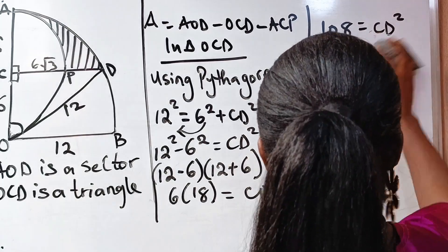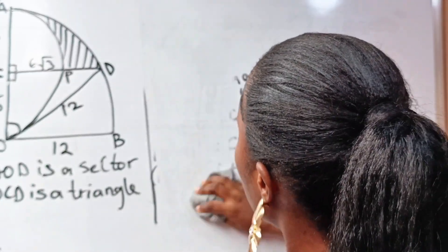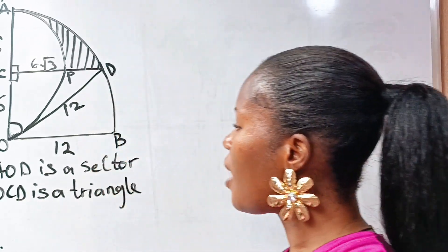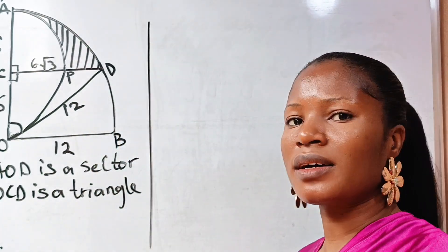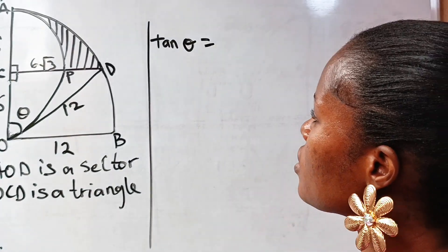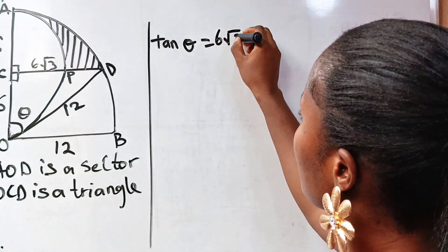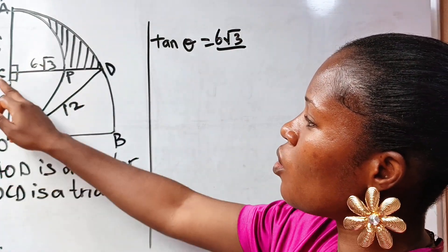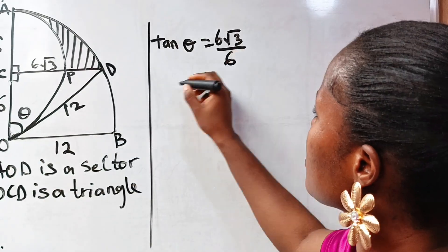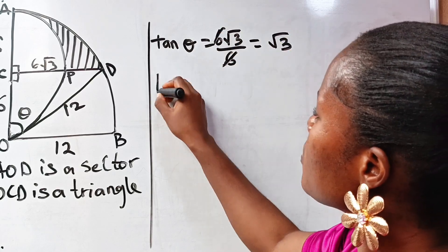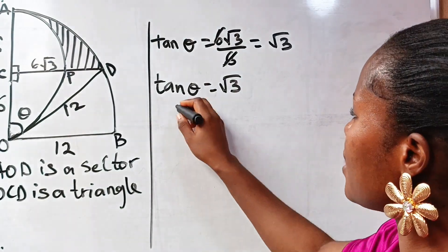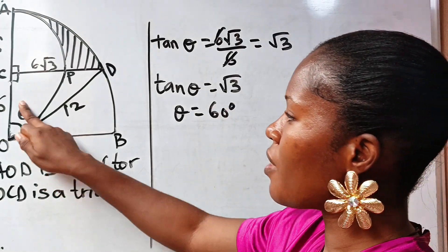If this is the first time you are seeing us, please click the subscription button, turn on your notification bell so that you don't miss our videos, and give us a thumbs up if you are enjoying this video. Now, to get theta in triangle OCD, tan theta equals opposite over adjacent, which is 6√3 over 6, giving us √3. So tan theta equals √3, which means theta is 60 degrees.